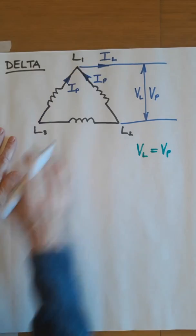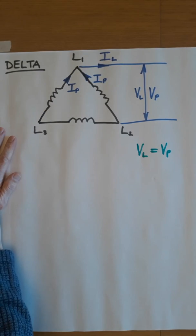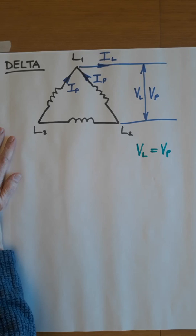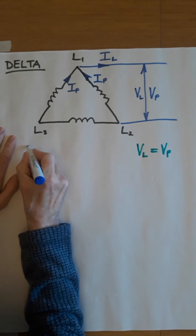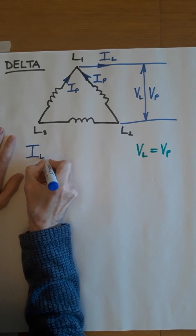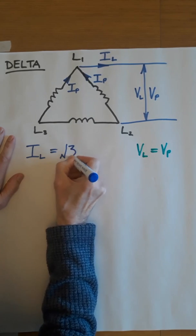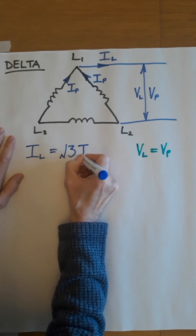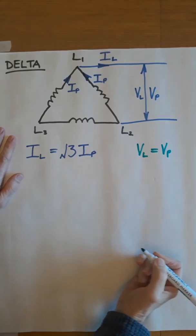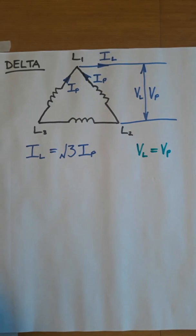So these are now related, surprise surprise, by the square root of 3. And we can calculate the line current from root 3, IP. And this is the formula to remember.